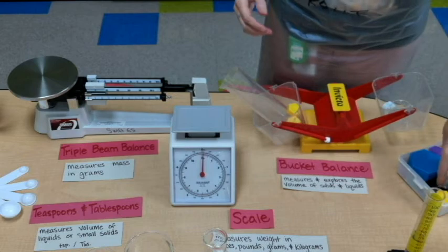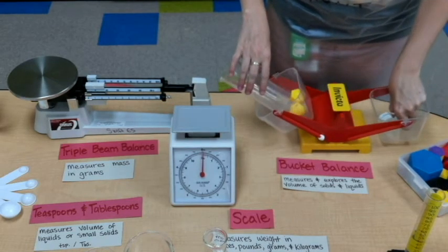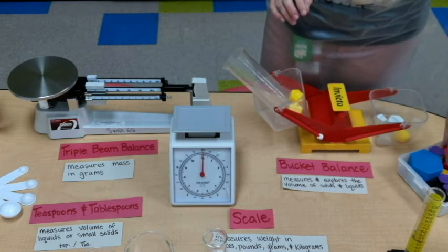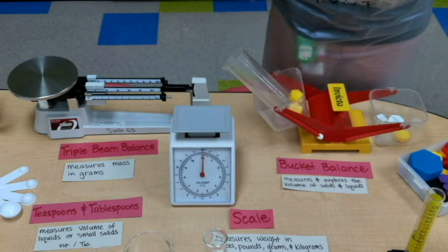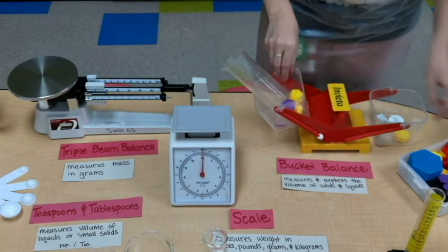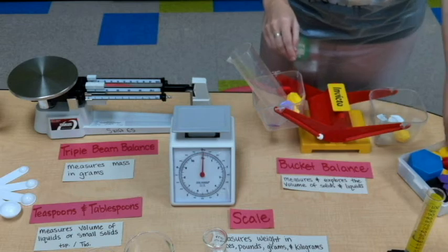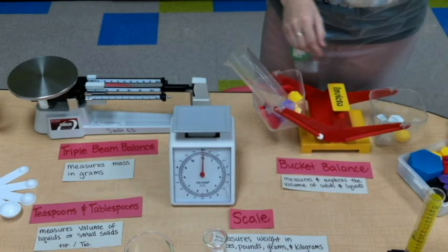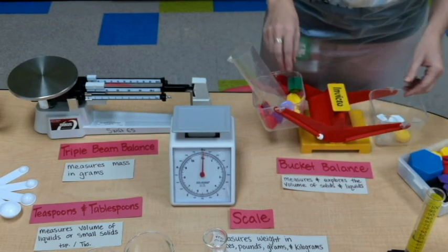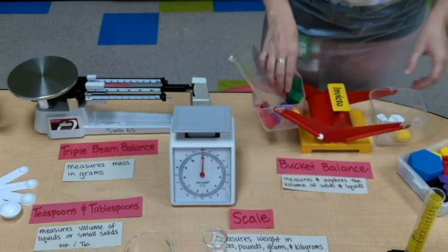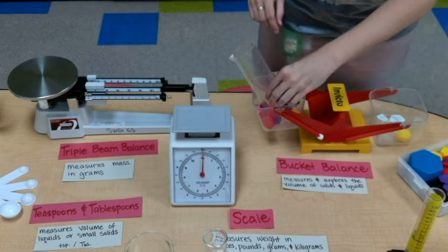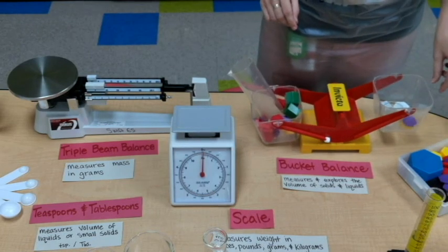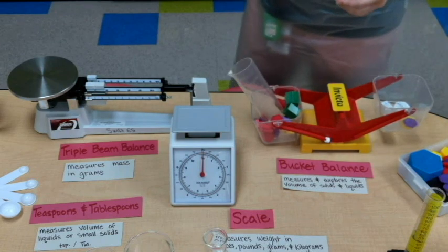And with the bucket balance, it's not necessarily accurate readings, unless you're using something like gram stackers. But with the younger kiddos, they're just trying to see visually what has more weight to it. If I keep adding on one side, is the balance eventually going to topple over? Am I going to add enough things, enough items, to one side that will eventually move the scale back and forth?